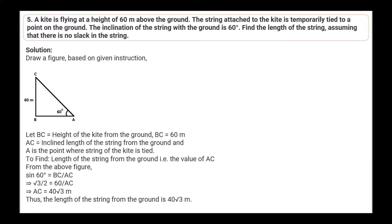Question 5: A kite is flying at a height of 60 meters above the ground. The string attached to the kite is temporarily tied to a point on the ground. The inclination of the string with the ground is 60 degrees. Find the length of the string, assuming no slack. Let BC = 60 meters (height), AC = length of string. sin 60° = BC/AC, so √3/2 = 60/AC, giving AC = 40√3 meters.